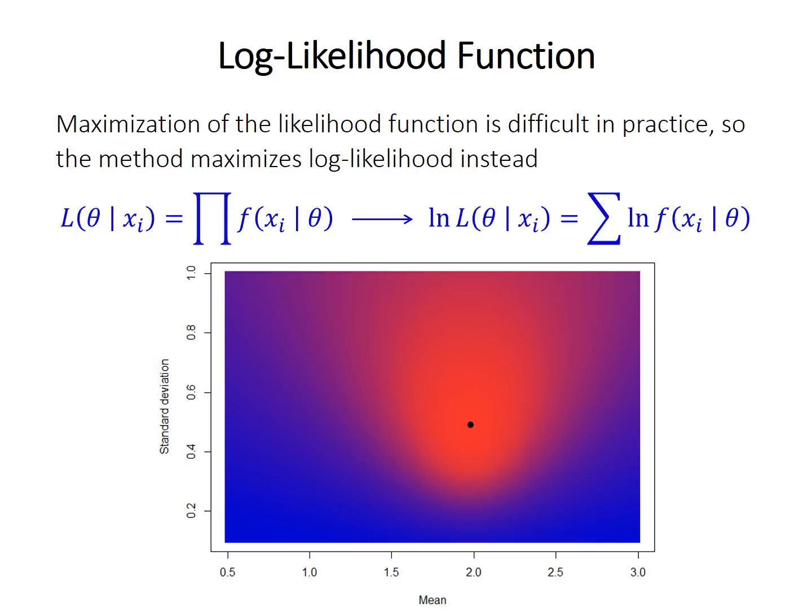So the graph here shows the log likelihood, blue or lower values, red or higher values for likelihood, and it's determined at each point in the graph by calculating the probability of observing the data given that particular mean and standard deviation. So we can say, okay, if the mean was 1 and the standard deviation is 0.2, what is the probability of observing the data? And that's our likelihood for those parameters being true.